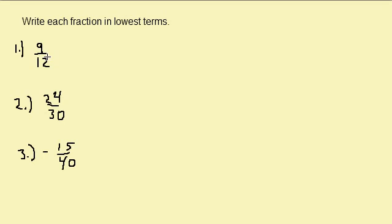the largest number that will divide into the numerator and denominator evenly would be 3. So 3 goes into 9 three times, 3 goes into 12 four times, and there's your answer.